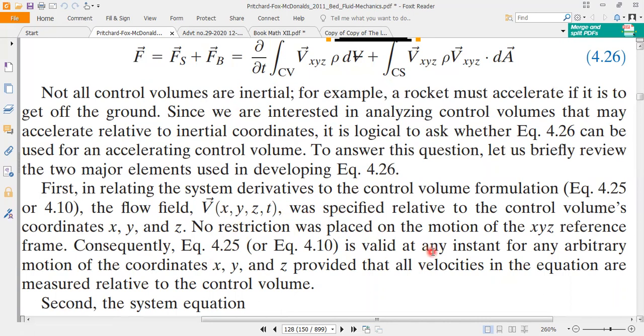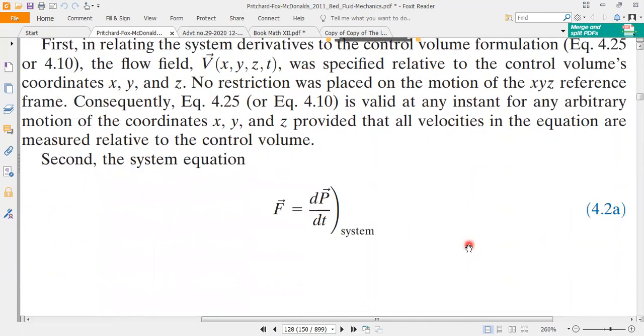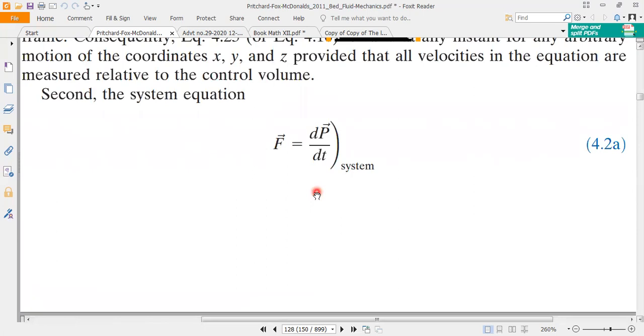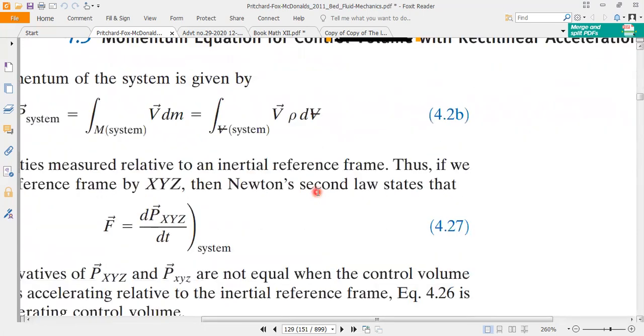First, in relating the system derivatives to the control volume formulation equation 4.25 or 4.10, the flow field V(x,y,z,t) was specified relative to the control volume's coordinates x, y, and z. No restriction was placed on the motion of the XYZ reference frame. Consequently, equation 4.25 is valid at any instant for any arbitrary motion of the coordinates XYZ provided that all velocities in the equation are measured relative to the control volume. Second, the system equation F equals dP/dt.